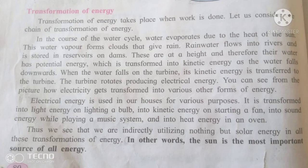There are details of the transformation of energy. Transformation of energy takes place when work is done. Let's consider a chain of transformation of energy. In the course of the water cycle, water evaporates due to the heat of the sun, forming clouds that give rain. Rainwater flows into rivers and is stored in dams at a height, giving the water potential energy, which is transferred into kinetic energy as the water falls and hits the turbine.